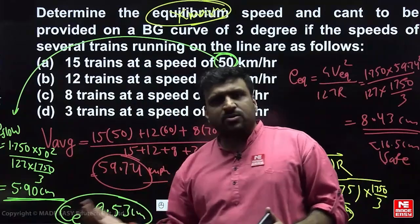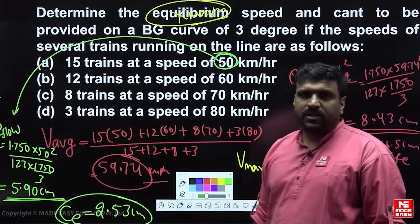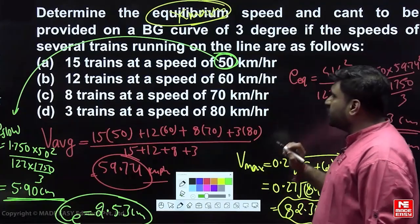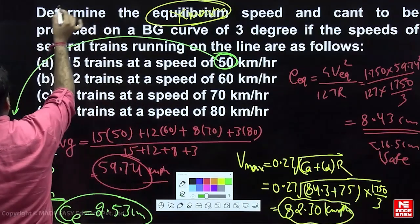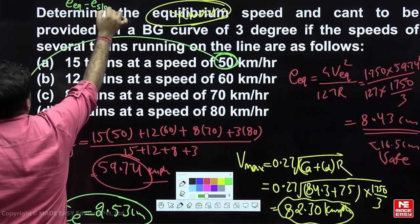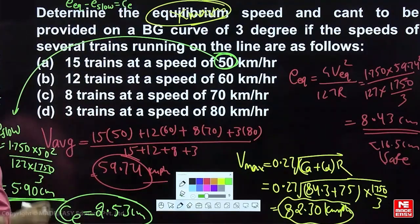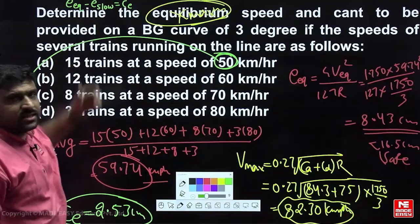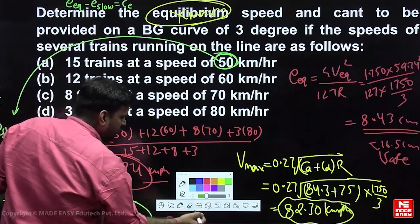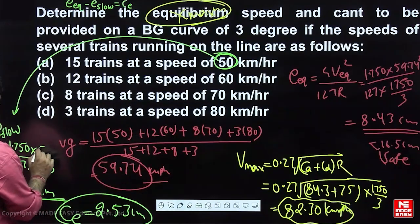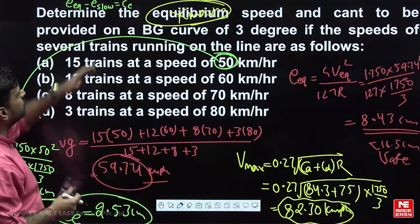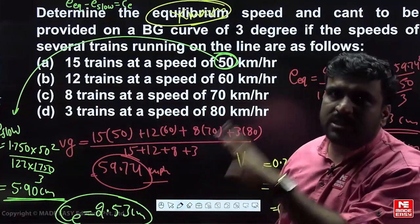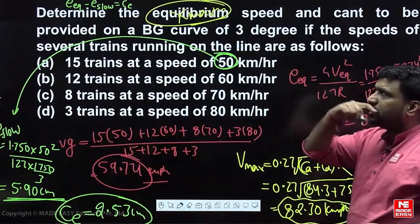You can also calculate the cant excess from here. They may also ask for the slowest possible speed. In that case: e_equilibrium − e_slowest = Ce (cant excess). Taking e_equilibrium = 8.43 cm and maximum Ce = 7.5 cm, solve for V_slow using: 8.43 − (1.750 × V_slow²) / (127 × 1750/3) = 7.5 cm. You can also convert to meters to keep consistent units.